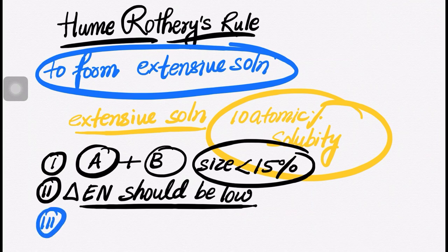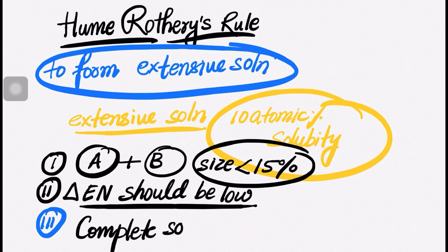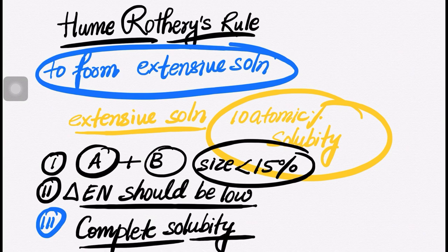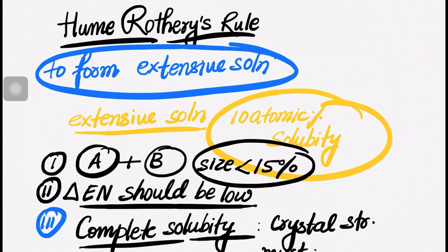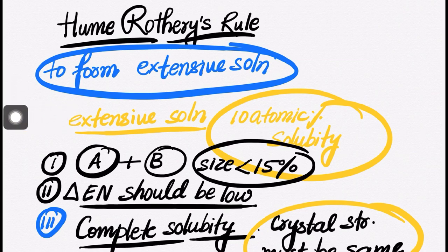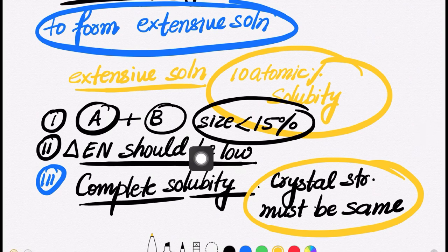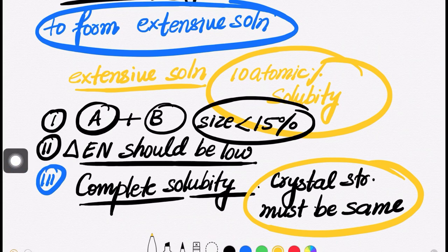Third, for complete solubility — if you want solubility to be very high, or complete solubility where they are soluble in any ratio — then their crystal structure must be same. So these are basically three rules: size difference less than 15 percent, electronegativity difference should be low, and for complete solubility, crystal structure must be same.